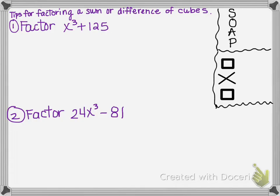We want to factor x cubed plus 125. Once you determine that these are each perfect cubes, you can say you have a sum of cubes. You have to see if each of these terms was the result of something being cubed. To get x cubed, you took the variable x and cubed it. To get 125, you took the number five and cubed it, and they are separated by a plus. So there we have a sum of cubes, because these are two perfect cubes.